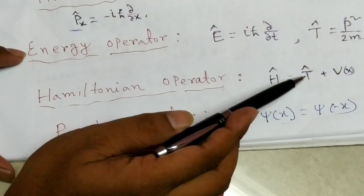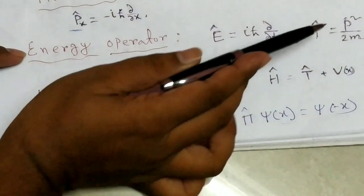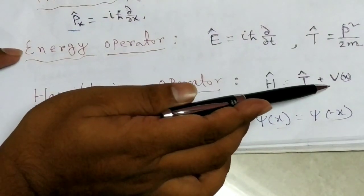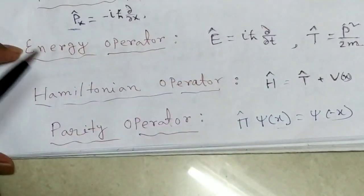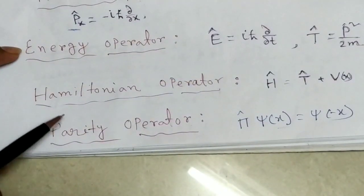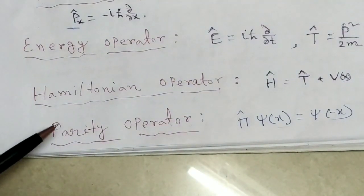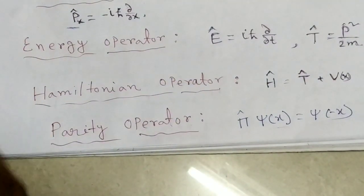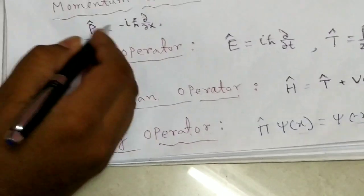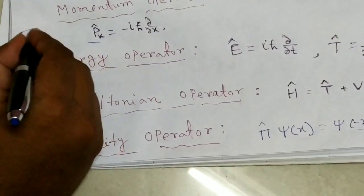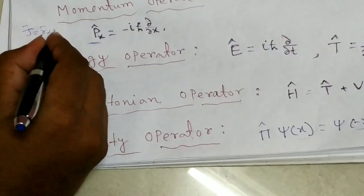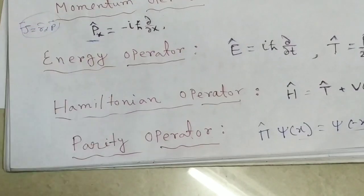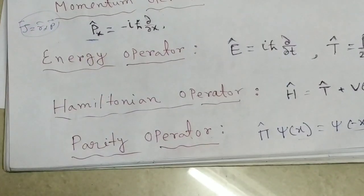The Hamiltonian operator equals kinetic energy plus potential energy: kinetic energy equals p²/2m and potential energy equals V(x). Additionally, the angular momentum operator J equals r cross p, so linear momentum becomes angular momentum and the angular momentum operator can be easily derived.